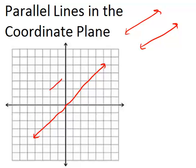Because parallel lines never intersect, this means that they are moving through the plane at the same rate, or in other words, they have to be the same steepness of the line. So the slopes will always be the same.